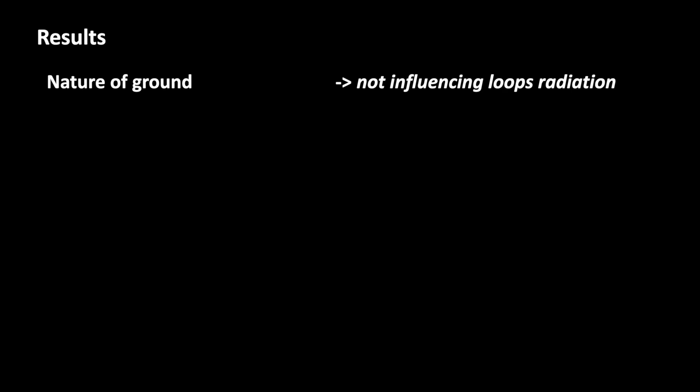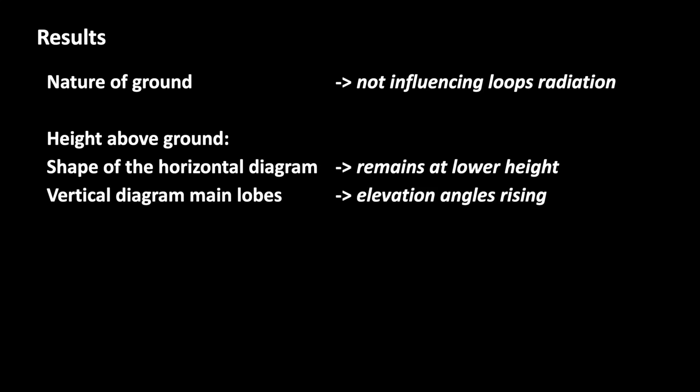We can summarize the results as follows. The nature of ground has little influence on the radiation of the loop. I think the differences are too small to notice during operation. It's not like vertical antennas where good grounding is important. At 7 MHz and low height, a lot of energy is radiated to the sky instead to the side. That's a compromise you are making.